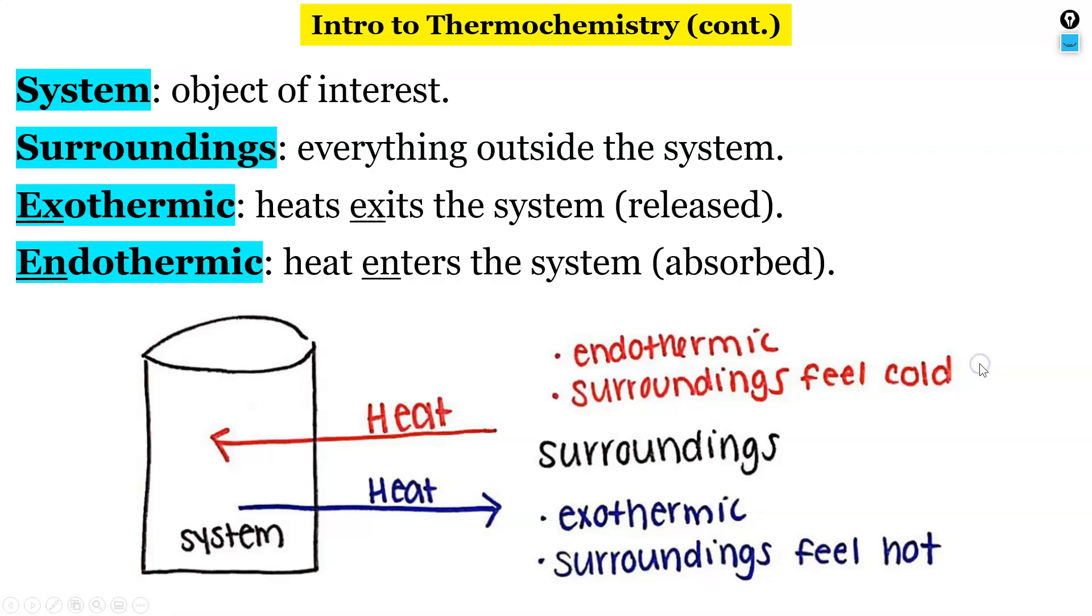We have a couple more definitions. A system is an object of interest, so a system can be anything. It could be a glass of water, it could be a building. A system is just an object of interest and the surroundings is everything outside of the system. So if I had a glass of water the system would be the glass of water and the surroundings would be the room, the air around that glass of water.